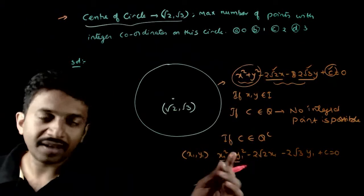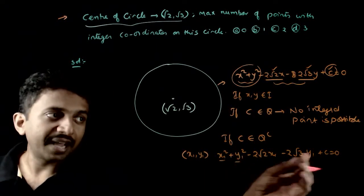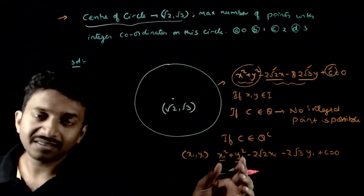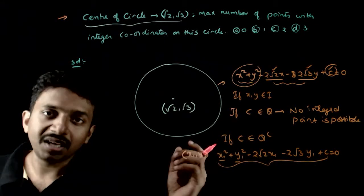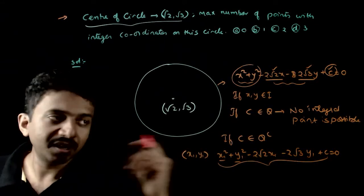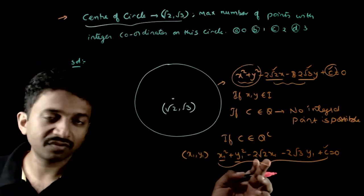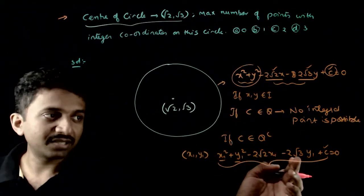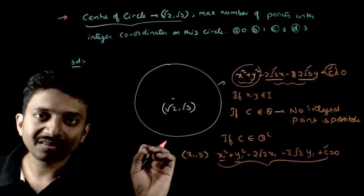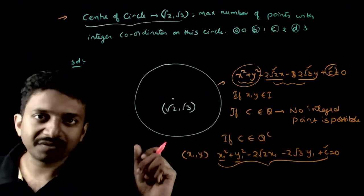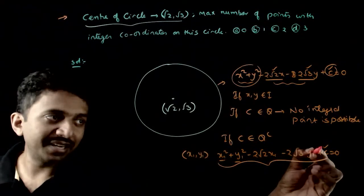Once x₁, y₁ values are fixed, I can find a c such that this equation becomes equal to 0. c is nothing but minus x₁² minus y₁² minus 2√2x₁ minus 2√3y₁. So I can select the minus of this whole thing as c.